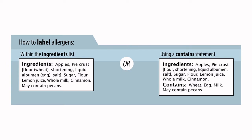These examples are taken from the CFIA website, and I'll share the link in the YouTube description so you can follow along. Now, how do we label allergens? In some cases we can label them within the ingredients list. Using the CFIA's apple pie example: we have apples, pie crust containing flour (which contains wheat), shortening, liquid albumin — a veiled name for eggs — salt, sugar, flour (wheat already declared), lemon juice, whole milk, and cinnamon. There's also a 'may contain pecans' statement at the bottom.